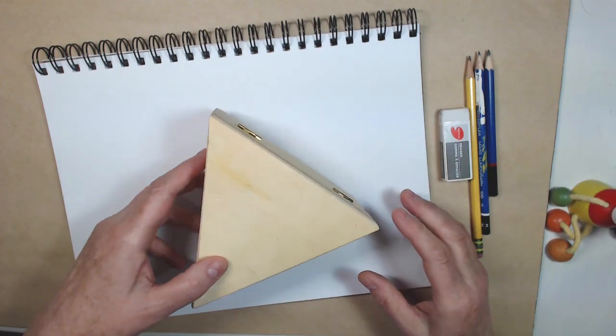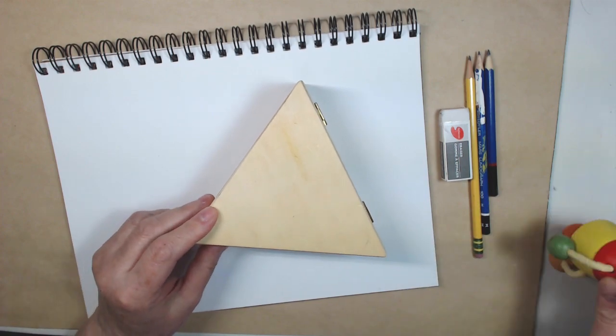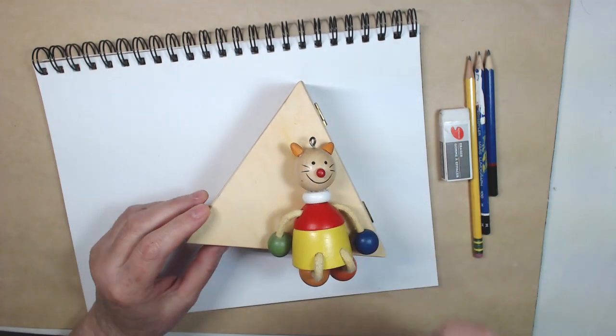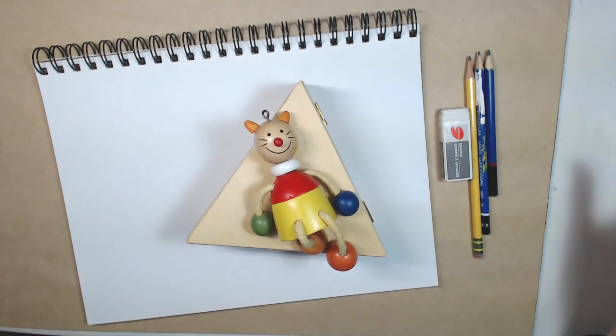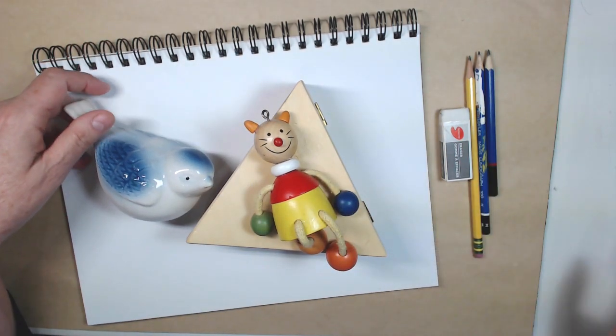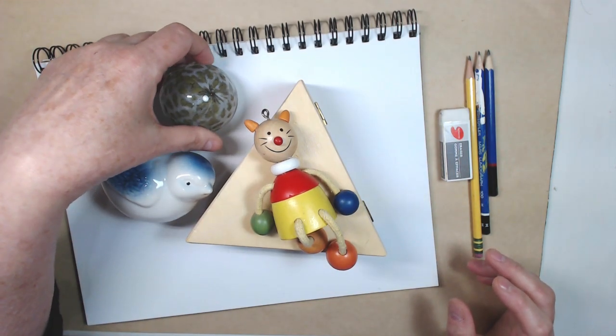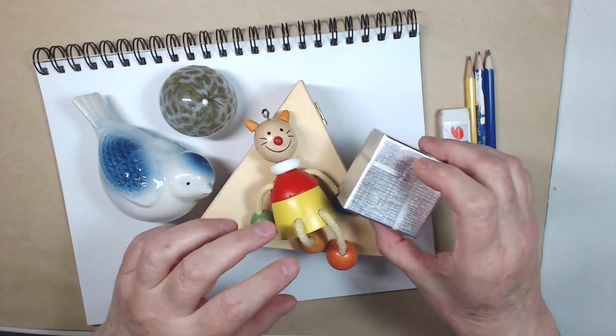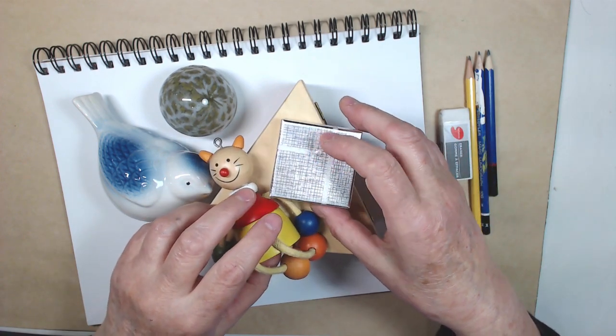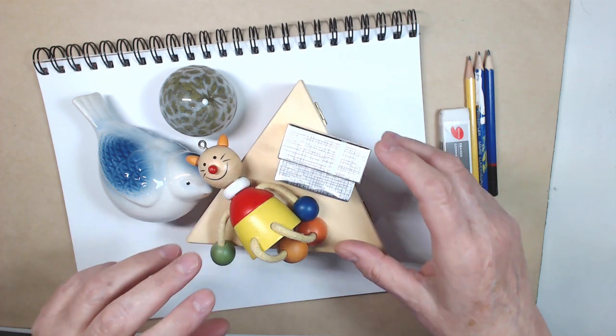Okay, so here are some of the things that I found. I found this interestingly shaped wooden box and I found this guy right here and I found a ceramic bird, a glass sphere, another little box which could be interesting to draw with the lid here.